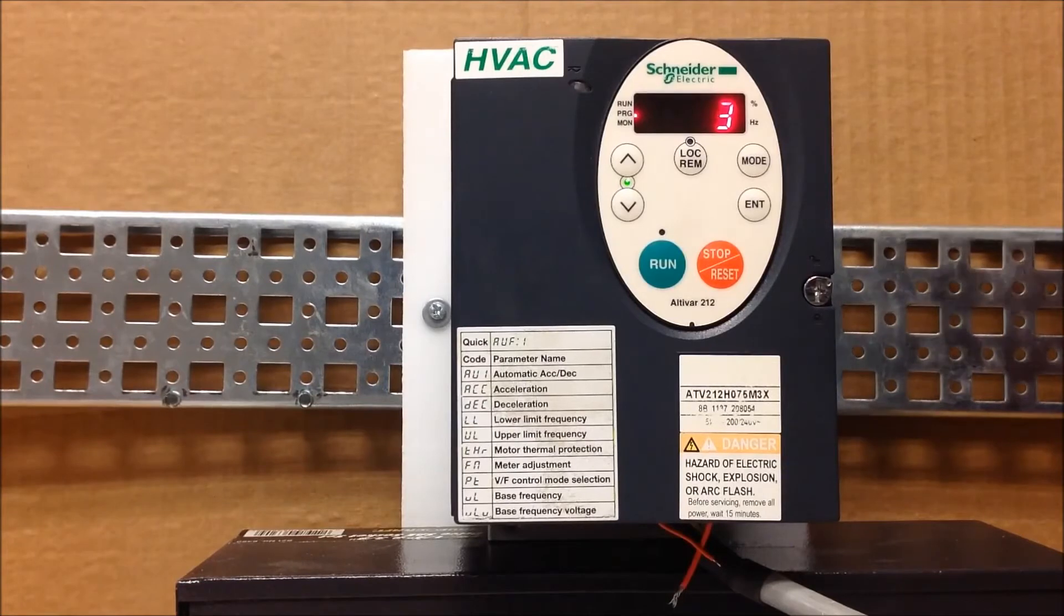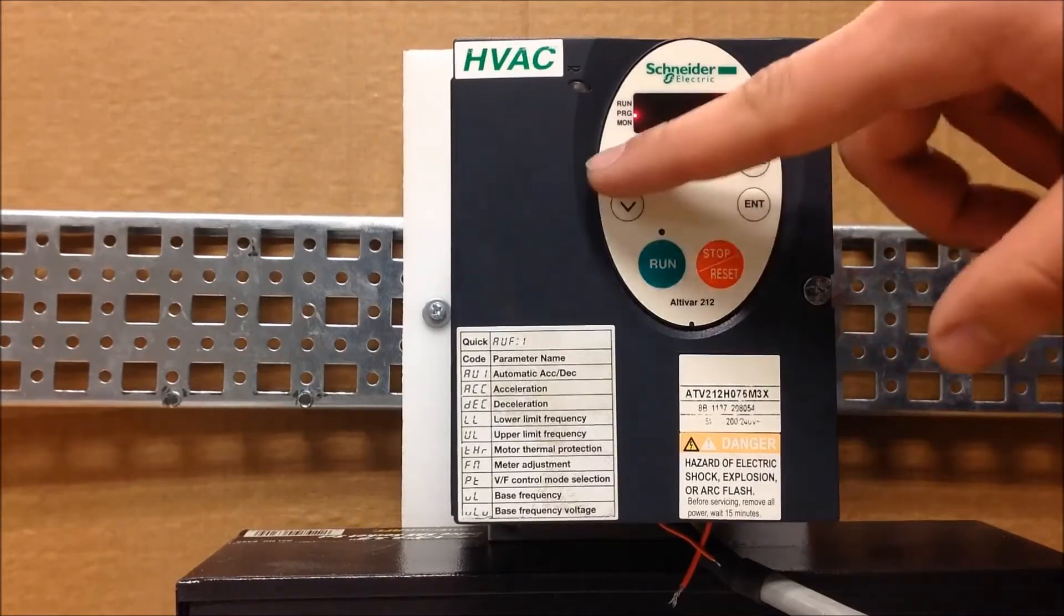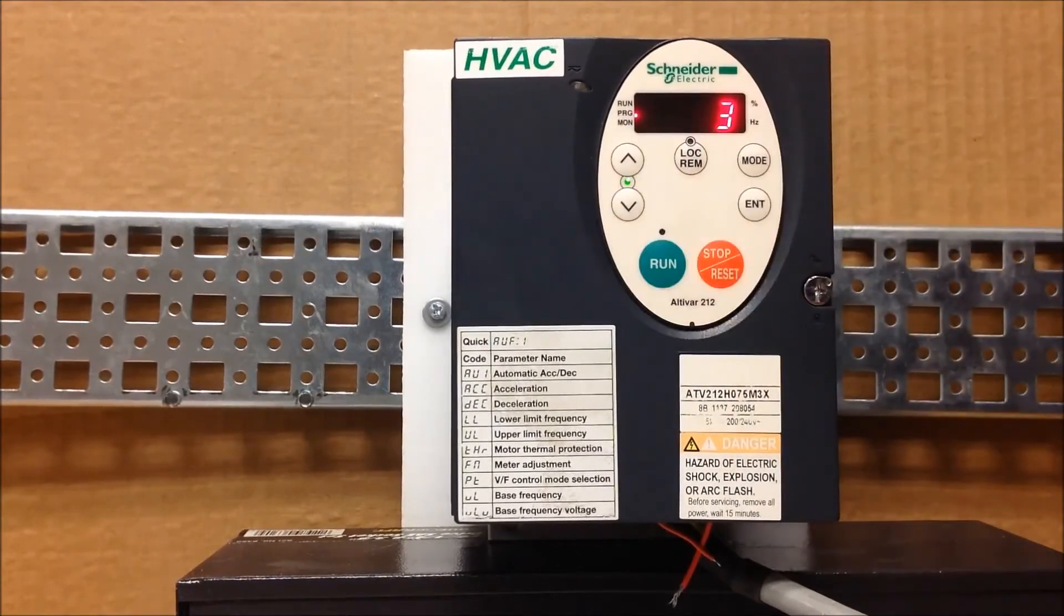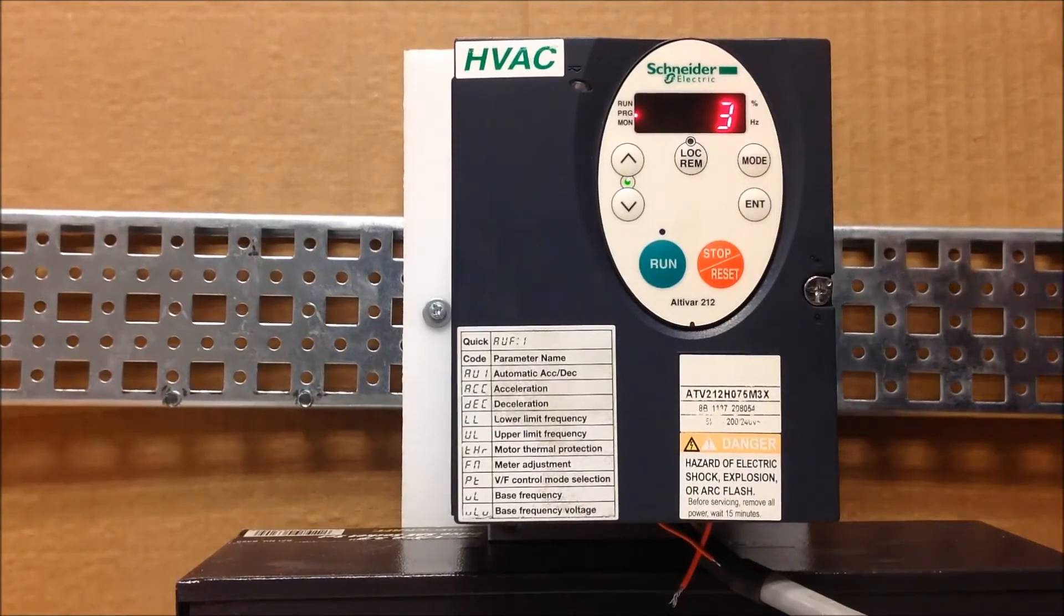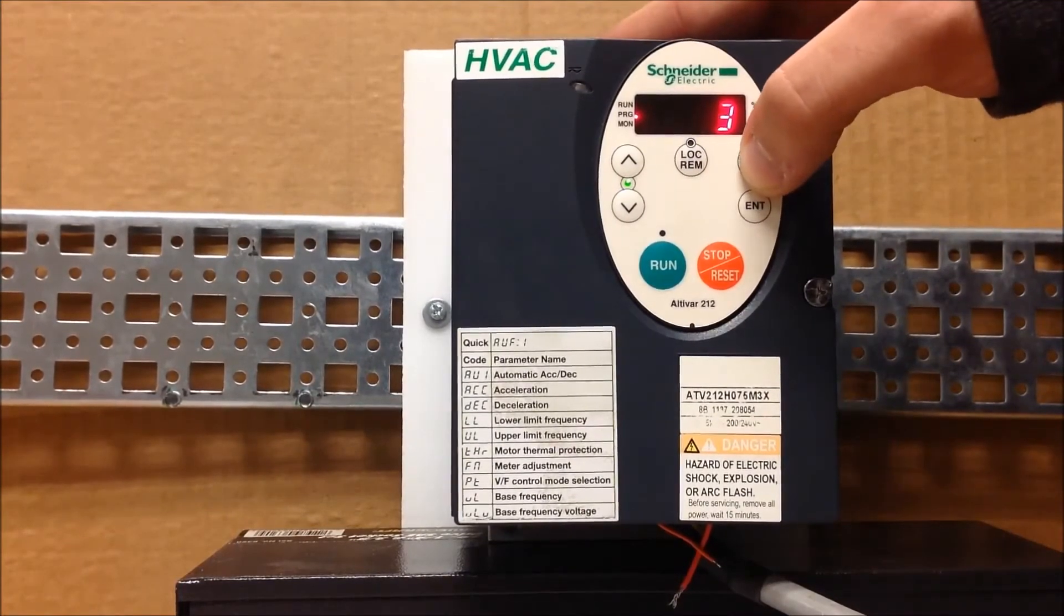FNOD is your frequency reference for the first channel. Depending on what you want this to be, there's five options: one is VIA, two is VIB source, three is the HMI keypad up and down, four is serial comms, and five is plus or minus speed. Let's assume you want to allow your up and down to be your first channel, so you want that to be a number three.